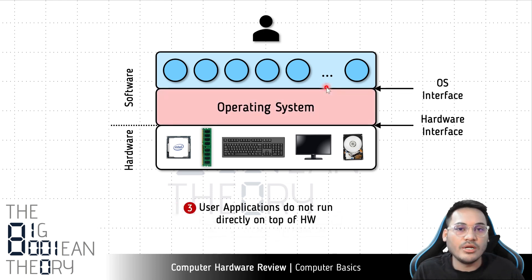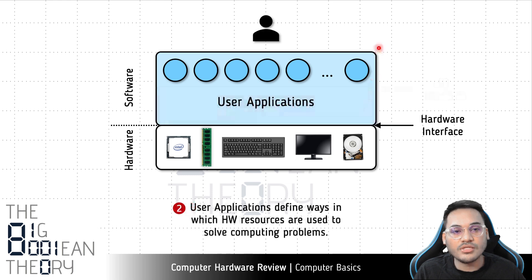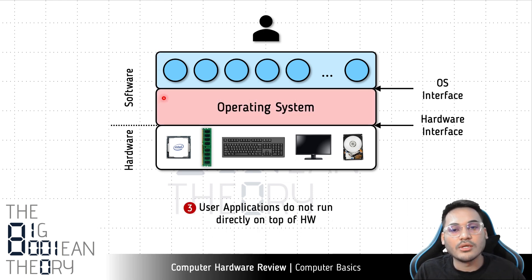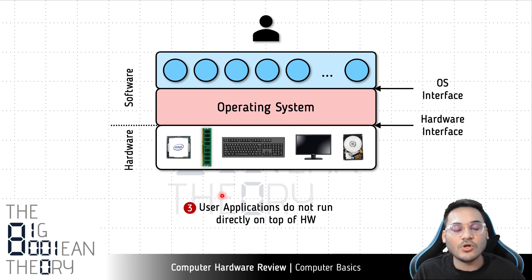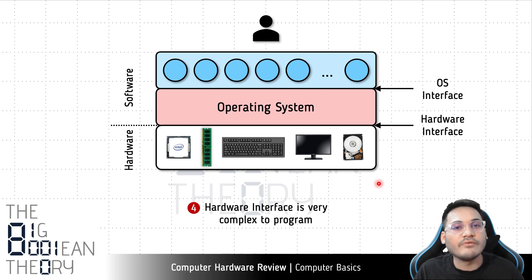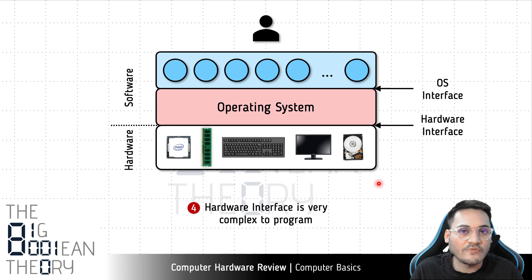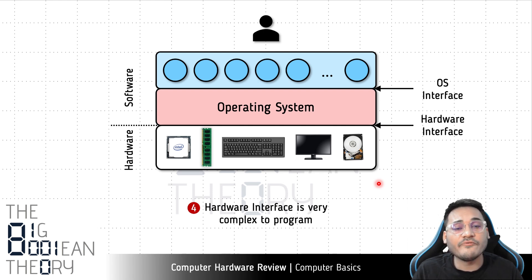Now let us bring the operating system into the picture. User applications do not run directly on top of the hardware interface — that image is inaccurate. User applications are not allowed to run on the hardware directly. There is a layer of software called the operating system which sits between the user application and the hardware, and it is the lowest level of software that runs directly on top of the hardware. The first reason for this is that the hardware interface is very complex to program.